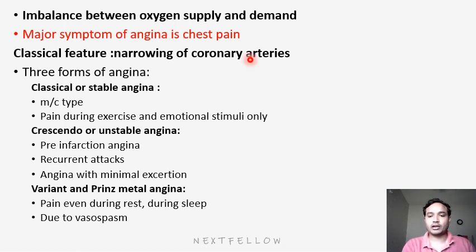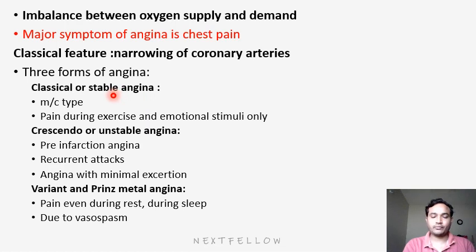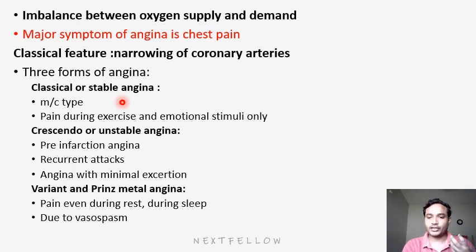There are three types of angina pectoris: classical or stable angina, crescendo or unstable angina, and variant or Prinzmetal angina. Most common is stable angina. Mostly the patient will have pain during exercise or emotional stimuli. Whenever the patient is doing exercise or some work, the body needs more blood supply, so the heart needs more oxygen, more pressure will be there, and the patient will have more pain. When doing some physical activity, patient will have pain — that is stable angina.